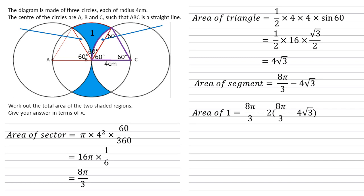So the area of 1 equals this 8π/3 from the sector minus two lots of the segment area 8π/3 - 4√3. This simplifies to 8√3 - 8π/3.